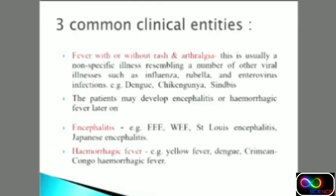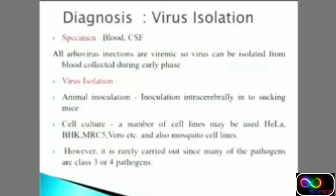Encephalitis typically occurs in Japanese Encephalitis, while hemorrhagic fever occurs in Dengue, Yellow Fever, and Crimean-Congo Hemorrhagic Fever. For diagnosis, the general approach is the same for all arboviruses — virus isolation using blood or CSF specimens, since arboviruses mostly cause viremia and brain involvement. Virus isolation is done by animal inoculation or cell culture in HeLa, BHK, or mosquito cell lines.